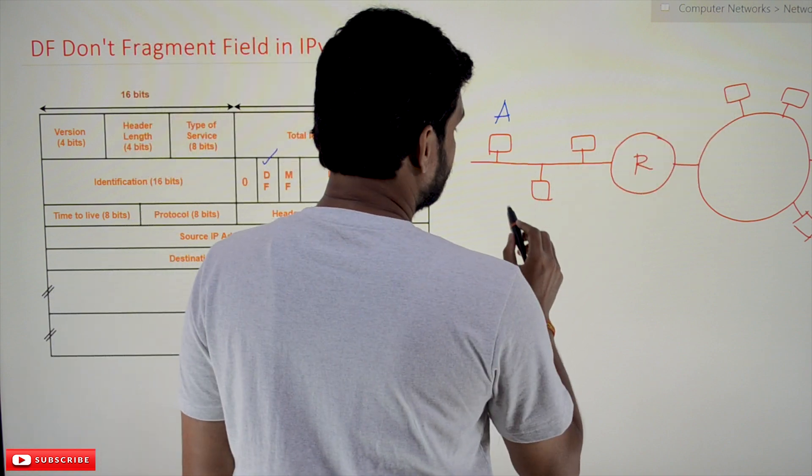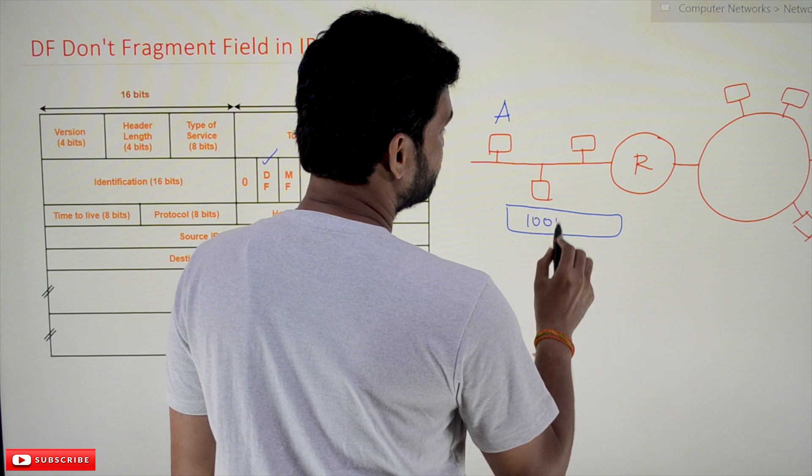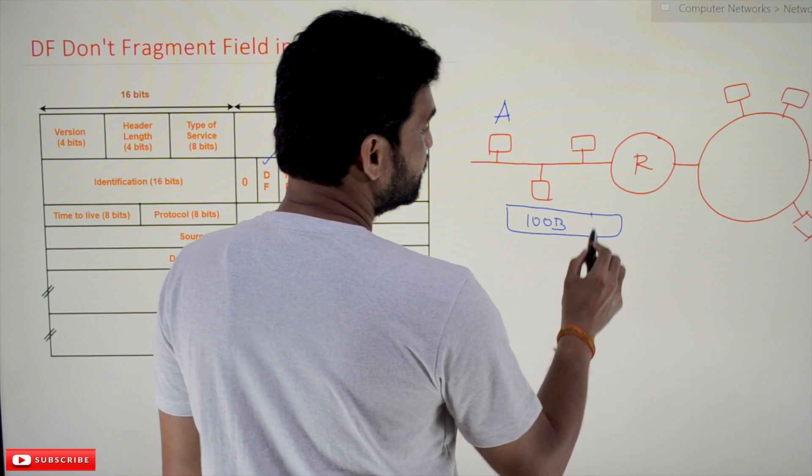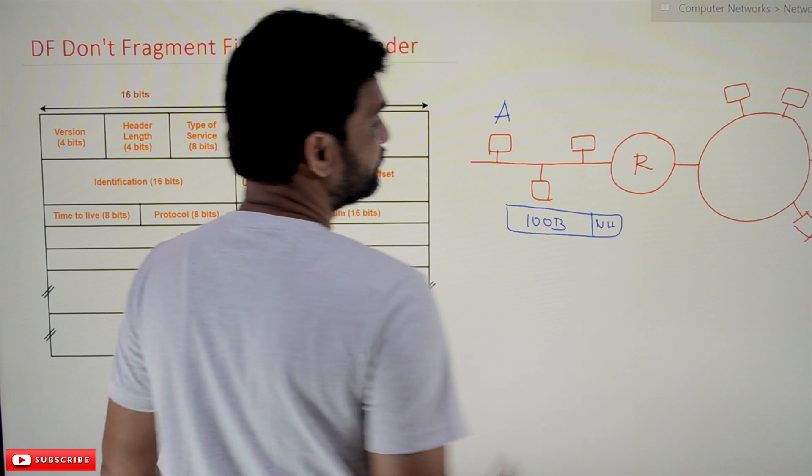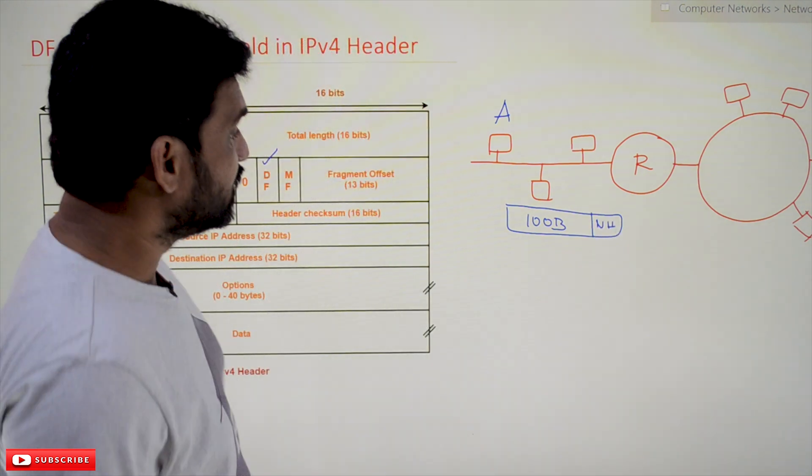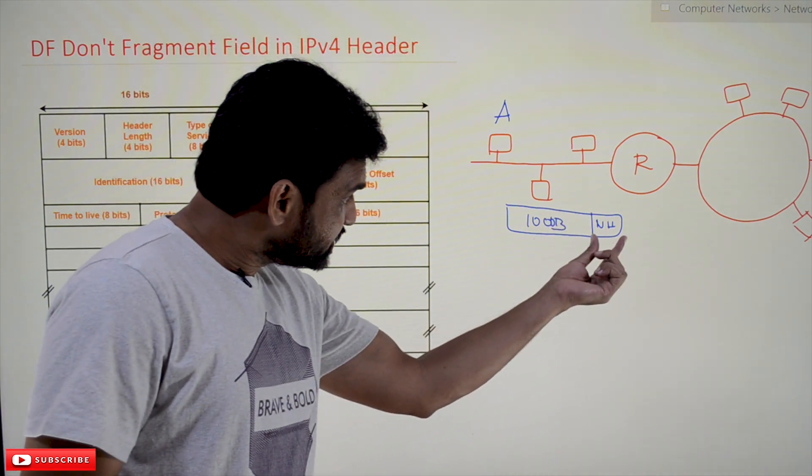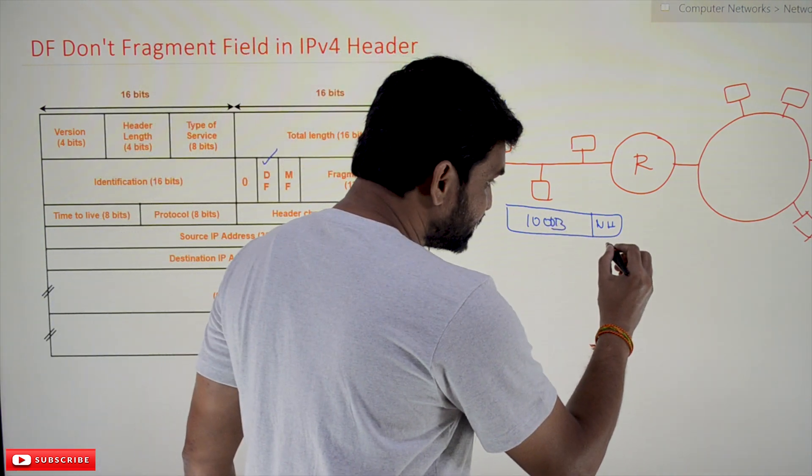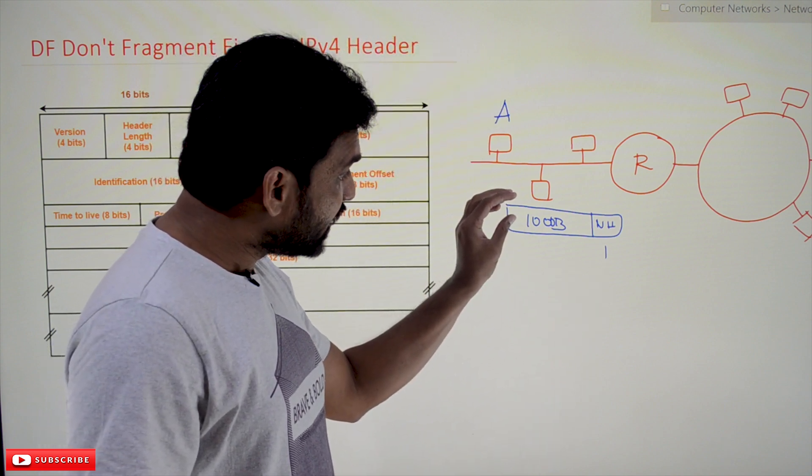Here we have a network header with 1000 bytes of data. If the DF is set to one in this network header, then when the packet is received at the router...